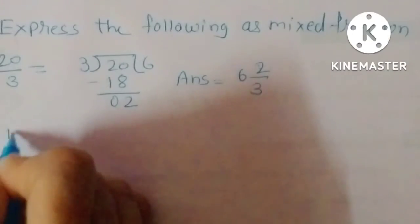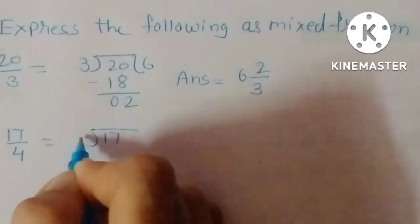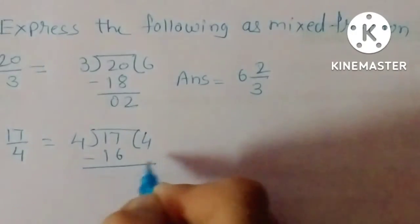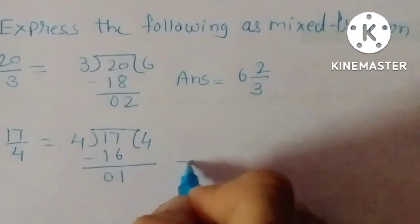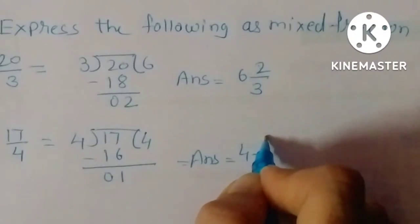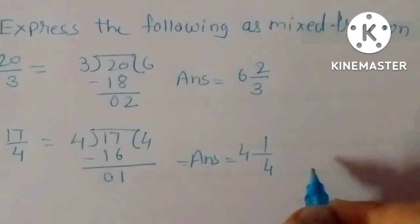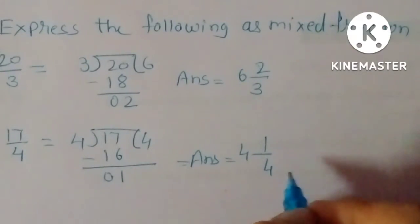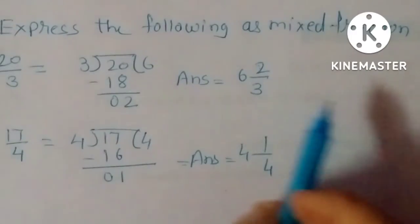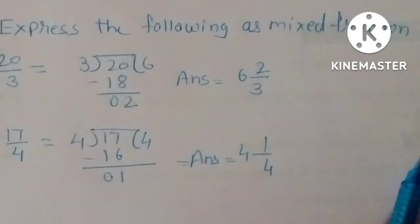Next, 17 upon 4. 17 divided by 4: 4 fours are 16, remainder 1. So the mixed fraction is 4 and 1/4. In these sums, 6 and 4 are whole numbers, and 2/3 and 1/4 are the fractional parts.